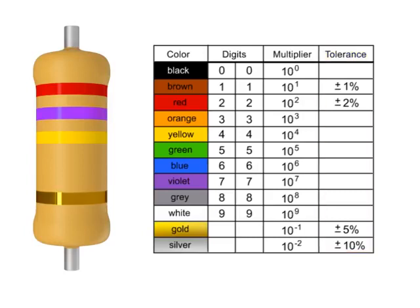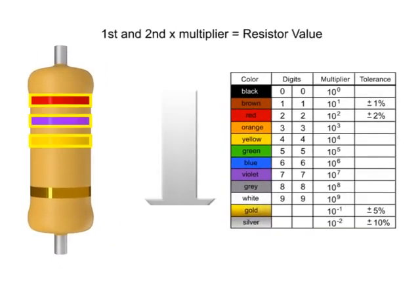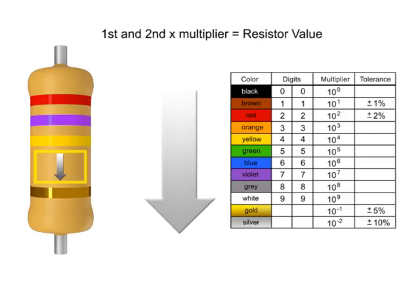You read resistor bands beginning with the end that has the most bands. A space between the third and fourth bands also indicates the reading direction.